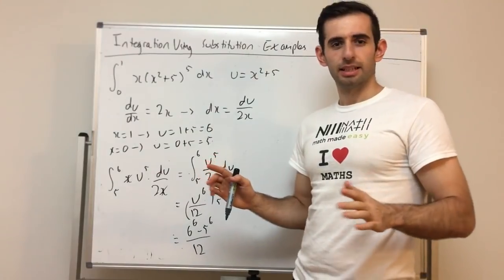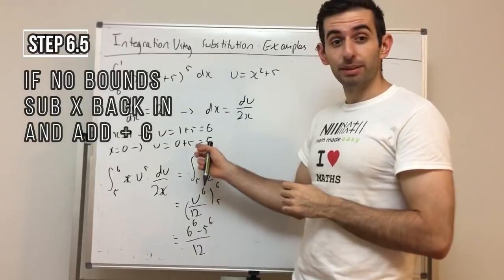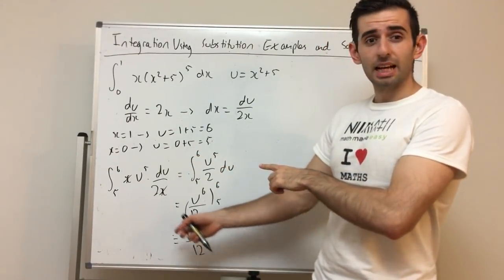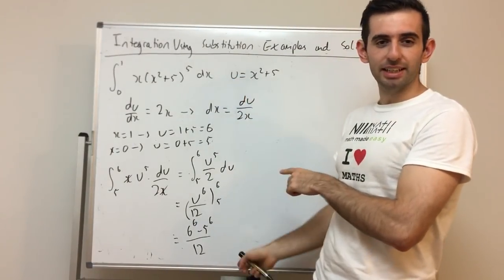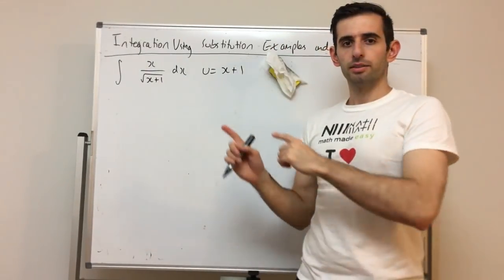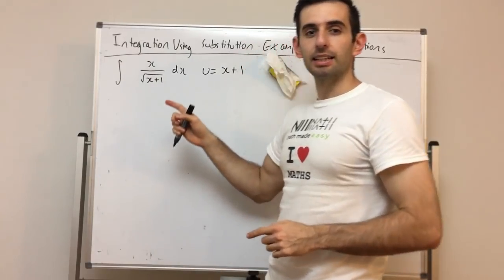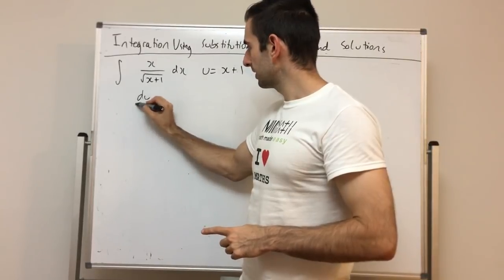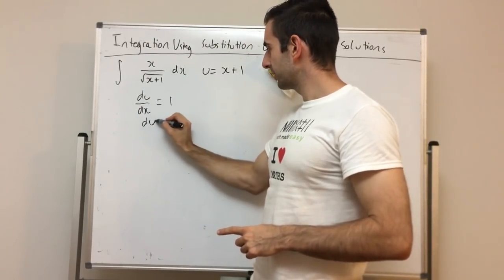An additional note: if we did not have bounds, we would have to sub u back in terms of x at the end and add a plus c. Let's look at an example that does that. Our next example: the integral of x / √(x + 1) dx, using u = x + 1. Following the same process, du/dx = 1, so du = dx.